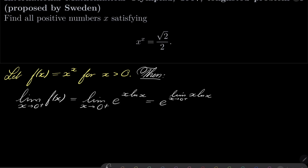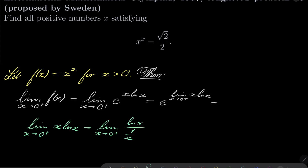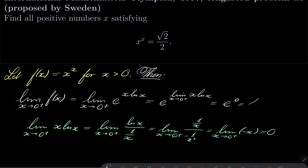To find this limit we will use L'Hôpital's rule. The limit as x goes to 0 from the right-hand side of x natural log of x is the same as the limit as x goes to 0 of natural log of x over 1 over x. Applying L'Hôpital's rule gives 1 over x divided by minus 1 over x squared, so it's the limit as x goes to 0 of minus x, which is 0. So our limit is e to the power of 0, which is 1.